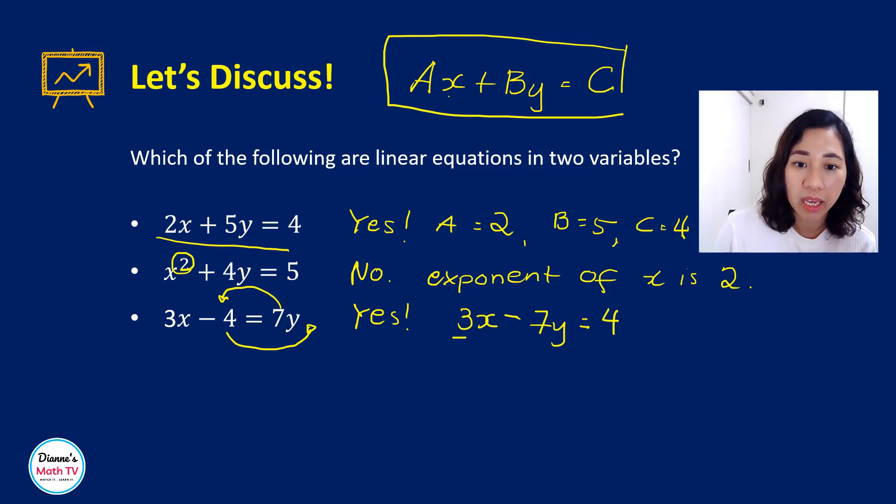So this is your a, b, and c. So let me write that. a is 3, b is, you have to include the sign negative 7, and c is equal to 4.